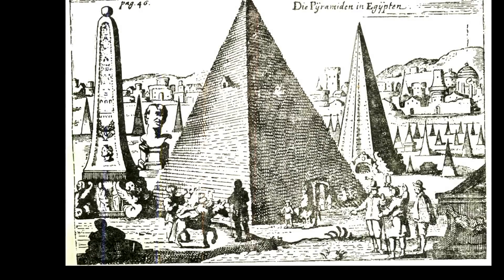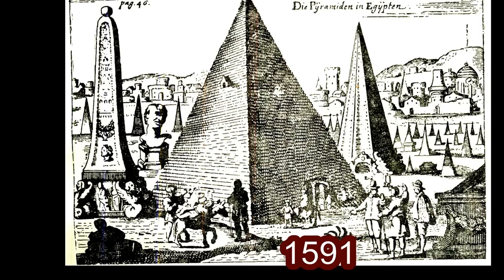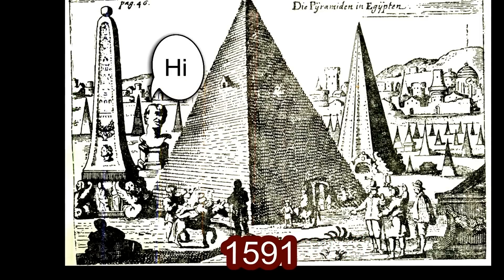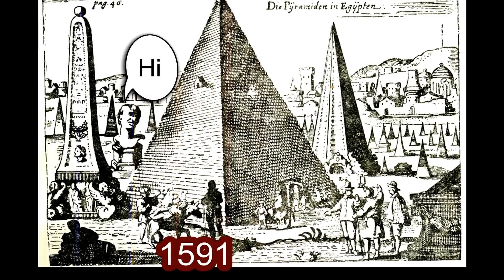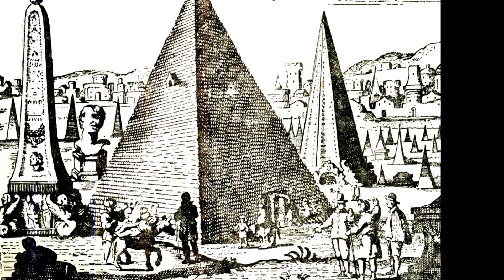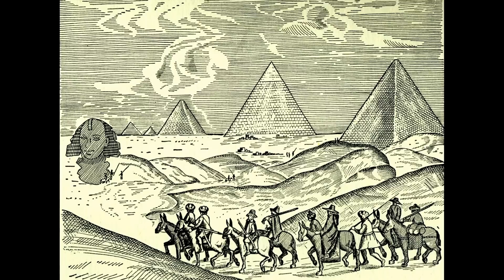Later on in 1591 you have the same idea but with a lot more so-called little pyramids, along with a few notable ones, and the Sphinx again being nothing more than a head on a platter.